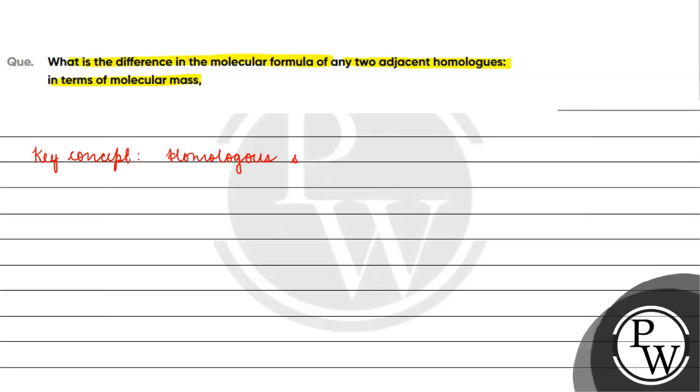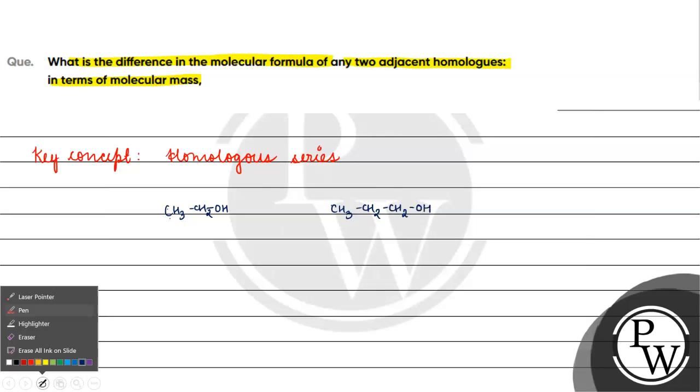Homologous series is like a series in which we differ by one CH2 unit. Like we have ethanol and propanol. What is the difference between these two? The difference is only one CH2 unit.